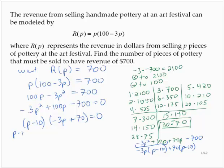Setting the factors to zero, p minus 10 is zero, which implies that p is equal to 10. Negative 3p plus 70 is equal to zero, so subtracting 70, dividing by 3, p is equal to 70 over 3.